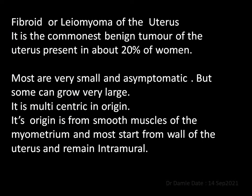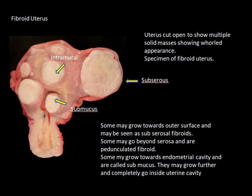Fibroid, or leiomyoma of the uterus, is the commonest benign tumor of the uterus, present in about 20% of women. Most are very small and asymptomatic, but some can grow very large. It is multicentric in origin. Its origin is from smooth muscles of the myometrium, and most start from the wall of the uterus and remain intramural.